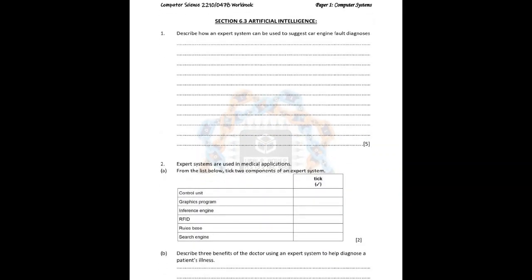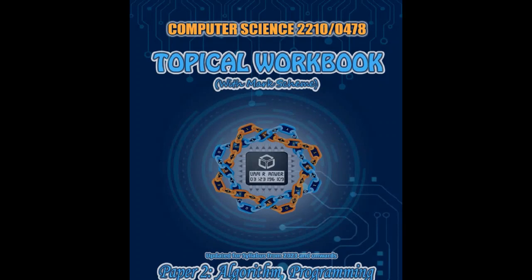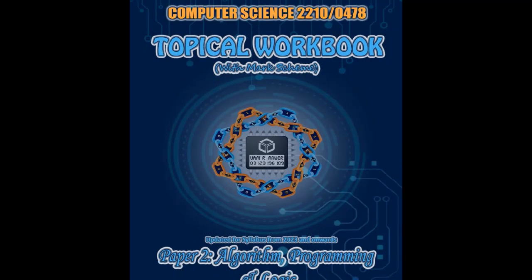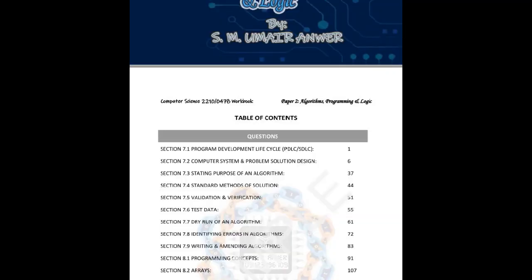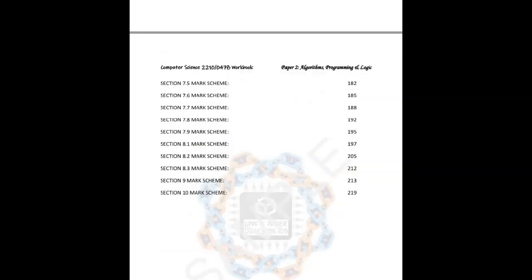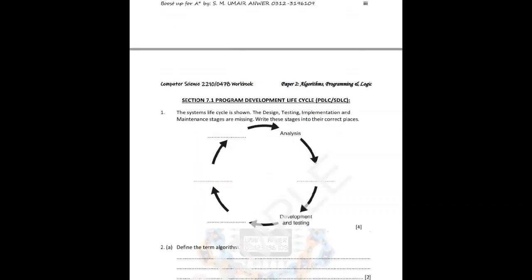This is just to show you a glimpse of what type of questions are included in the workbook. There are many more questions, and around 18 to 20 questions on average are included for each and every topic. Similar to the Paper One workbook, I have also designed a workbook for Paper Two — algorithm, programming, and logic — for CIE 2210 or 0478, GCE or IGCSE Computer Science. It contains questions on every subsection of the syllabus for Paper Two along with the mark scheme.